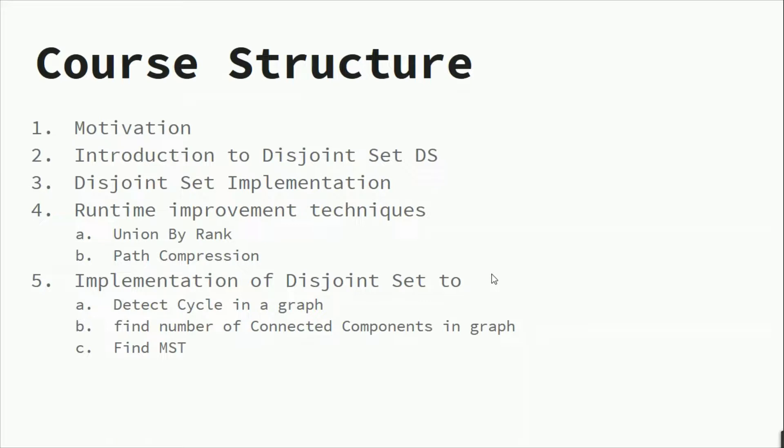And then, at last, we would see how we can implement disjoint sets to find or to detect cycles in a graph, or find the number of connected components in a graph, or find the MST—that is, minimum spanning tree.